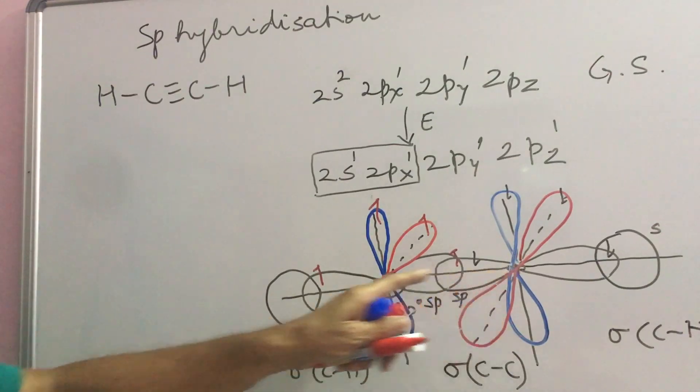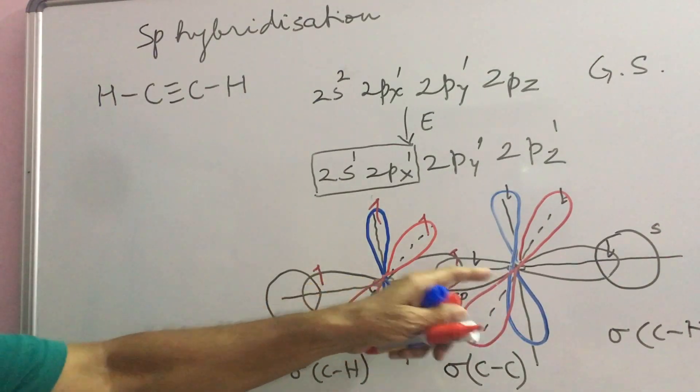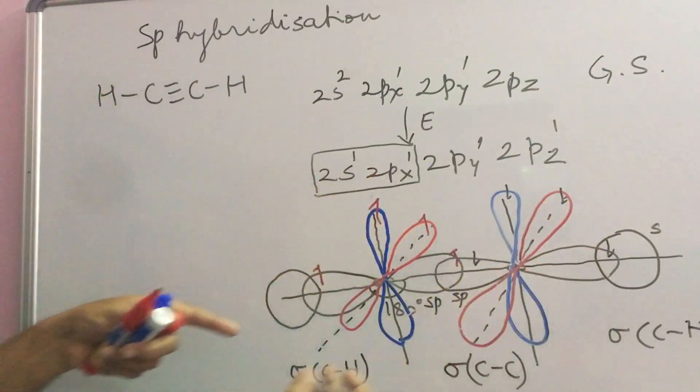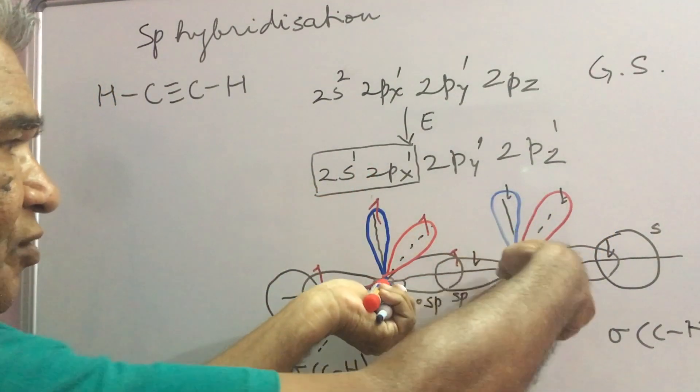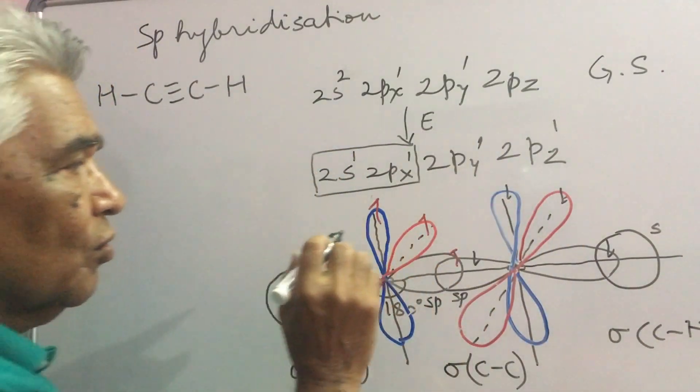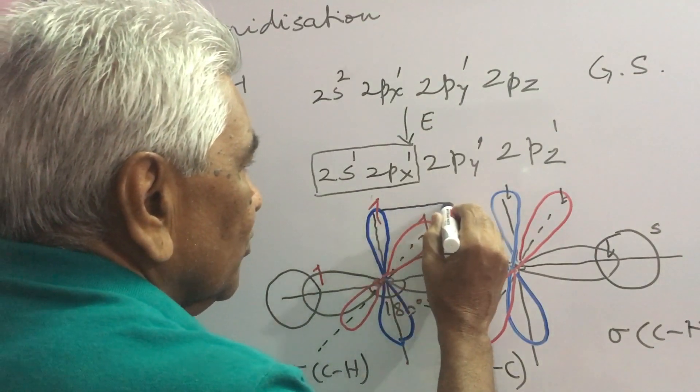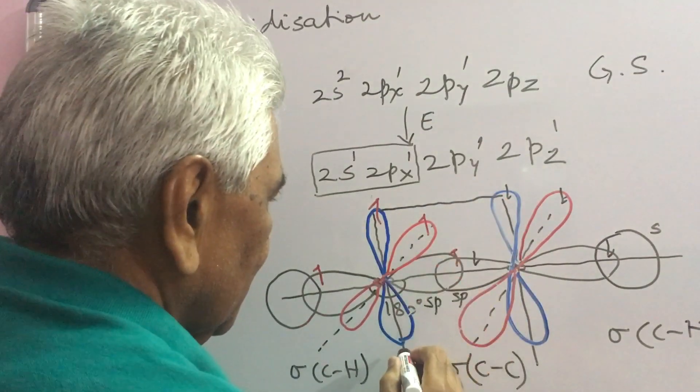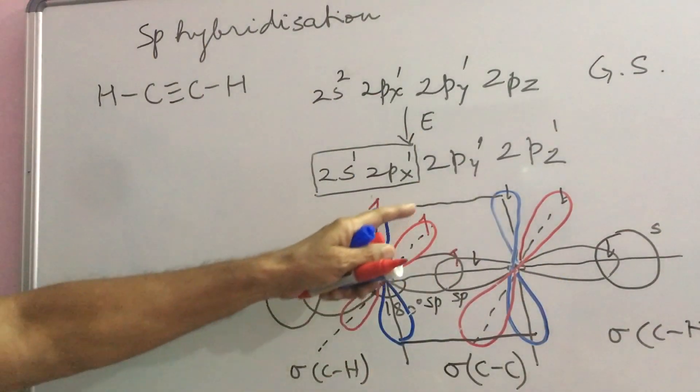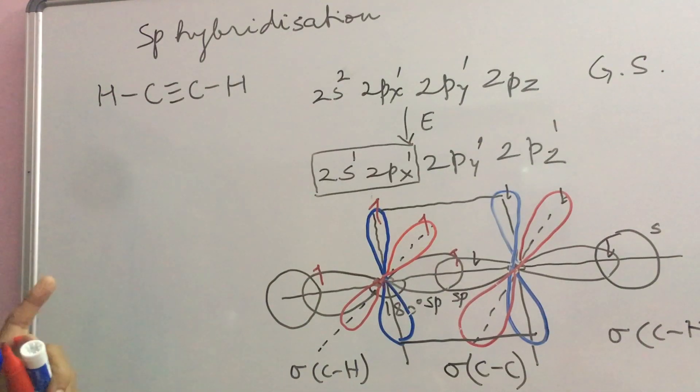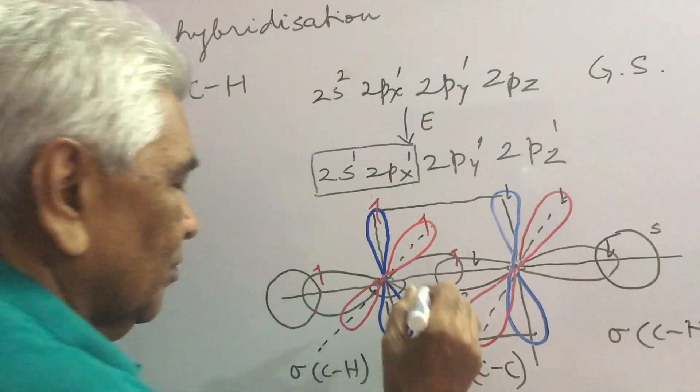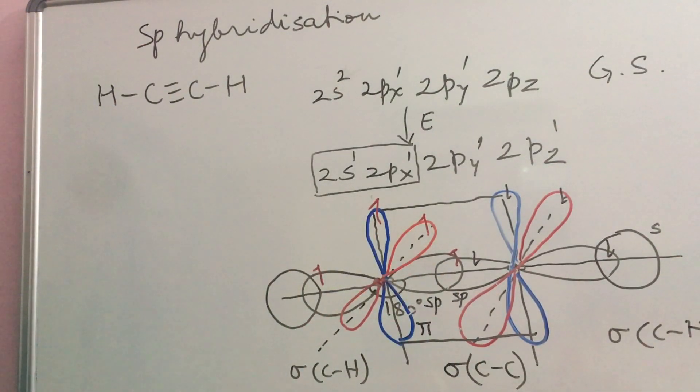Once they are joined by a sigma bond, sigma-CC bond, these two P-parallel orbitals and these two P-parallel orbitals standing like this overlap. One Pi orbital is formed, this Pi molecular orbital or Pi bond.